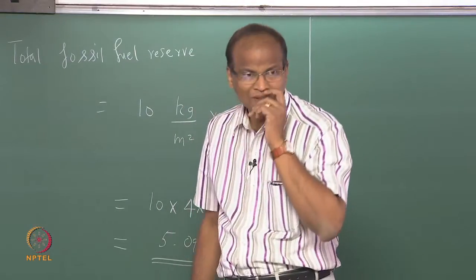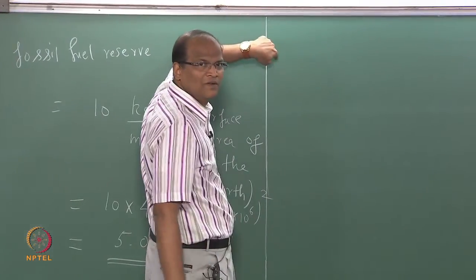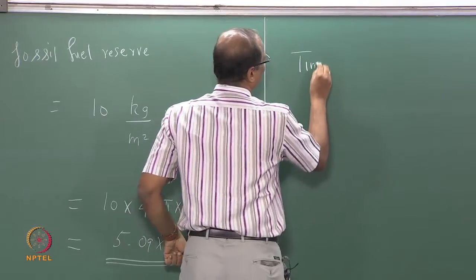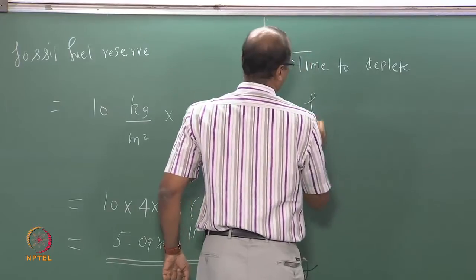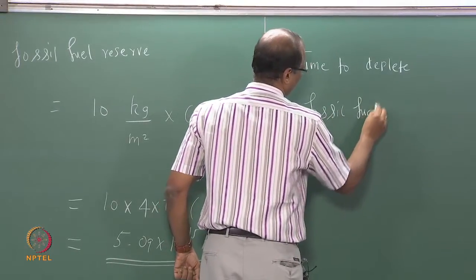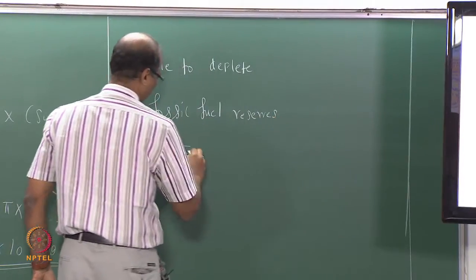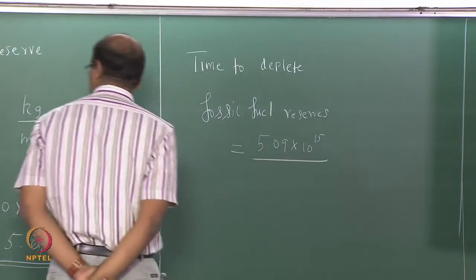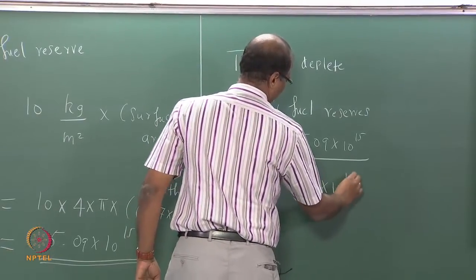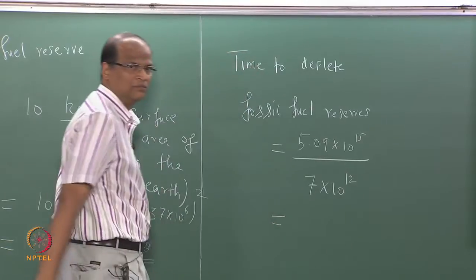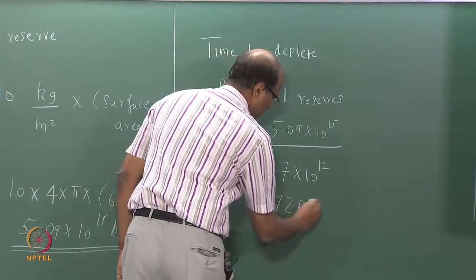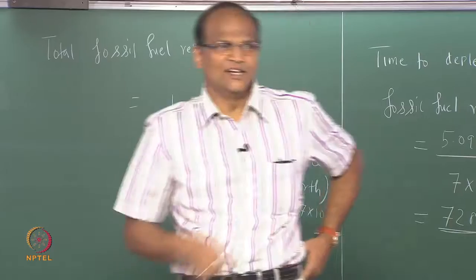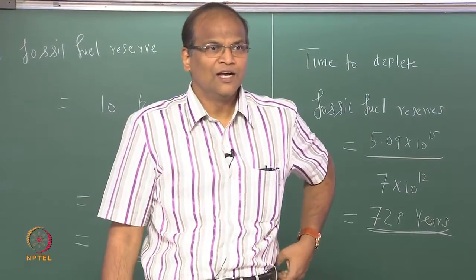The time to deplete is 728 years. So if you consume petrol, diesel, kerosene and so on at the same rate of 7 gigatons carbon per year, the fossil fuels will last for 728 years.